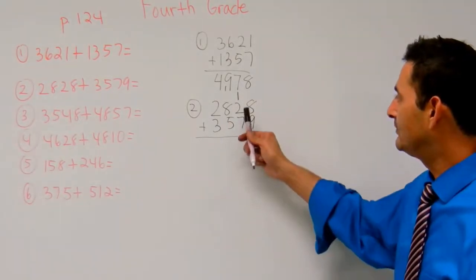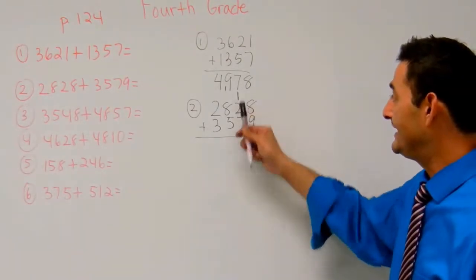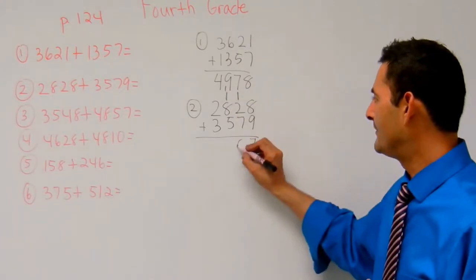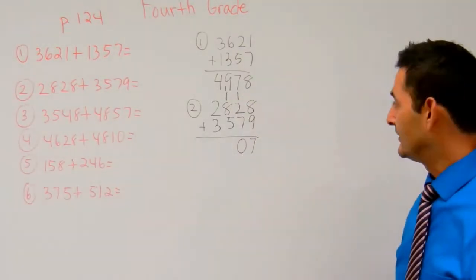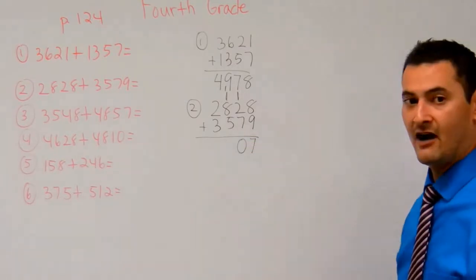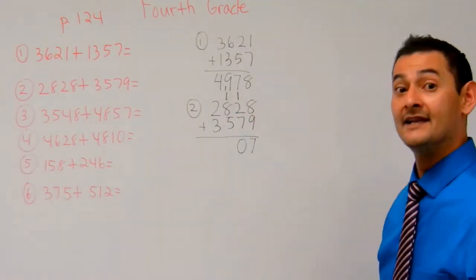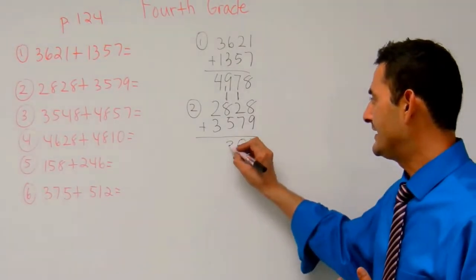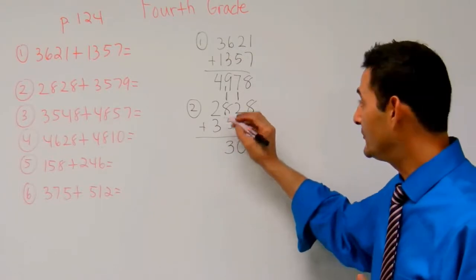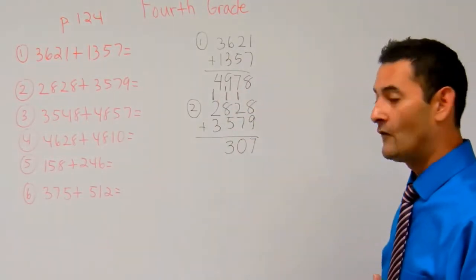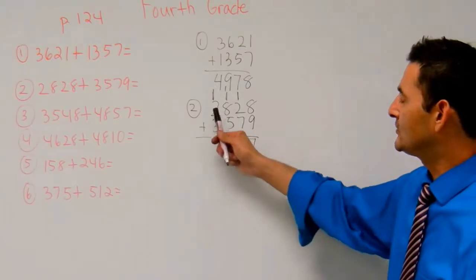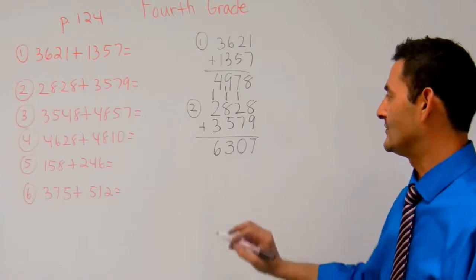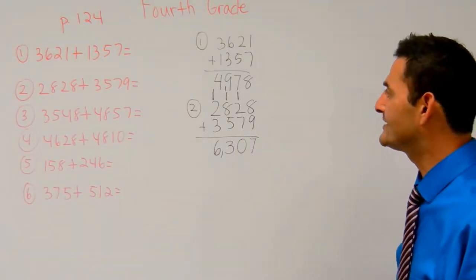So now I've got 7 plus 2 plus 1 in the 10's. That's going to be 10 10's. I can't have more than 9, so I'm going to move that over and put the 0 there. Now in the 100's column: 8 plus 5 plus 1, that's 13 100's. I can't have 13 100's — I can have 3 100's. I'm going to move those 10 100's, which is 1,000, over to the 1,000's place. Now I've got 3 plus 2 plus 1 thousands, that's going to be 6,000. So the answer is 6,307.